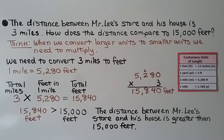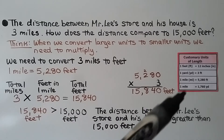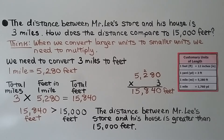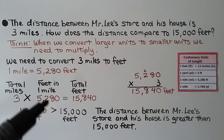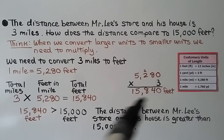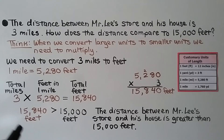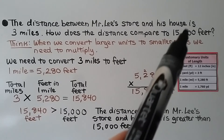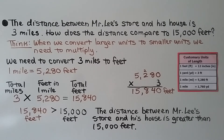The distance between Mr. Lee's store and his house is three miles. How does the distance compare to fifteen thousand feet? When we convert larger units like miles to smaller units like feet, we multiply. We need to convert three miles to feet: one mile equals 5,280 feet, so three times 5,280 equals 15,840 feet. And 15,840 feet is greater than 15,000 feet.